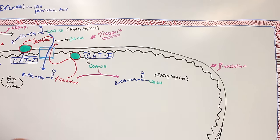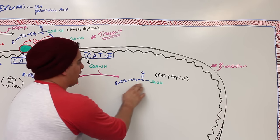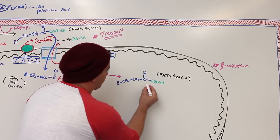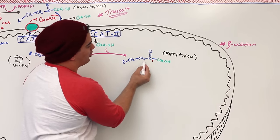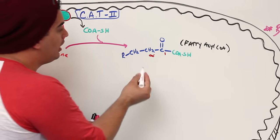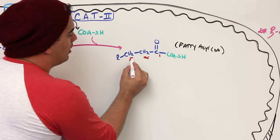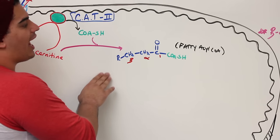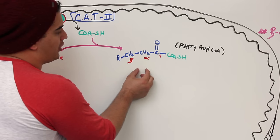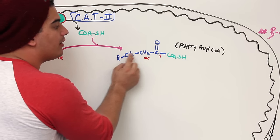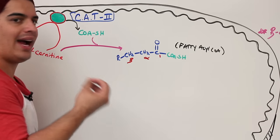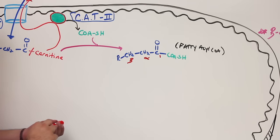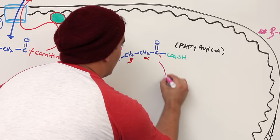In beta oxidation, we take this fatty acyl CoA through a series of reactions. First, let's denote the nomenclature: carbon one is bound to the CoA, carbon two is the alpha carbon, and carbon three is the beta carbon. In step one, we remove a hydrogen from the alpha carbon and a hydrogen from the beta carbon — pulling hydrides off the molecule.